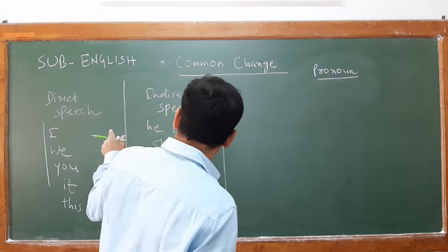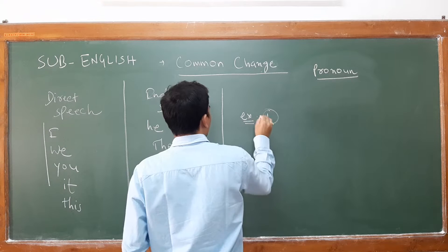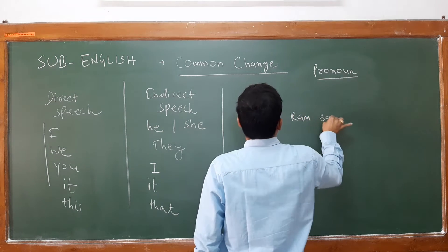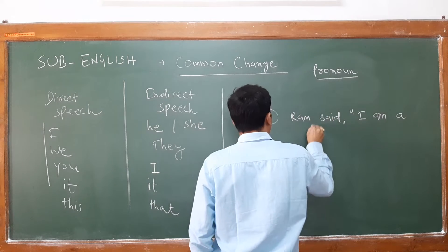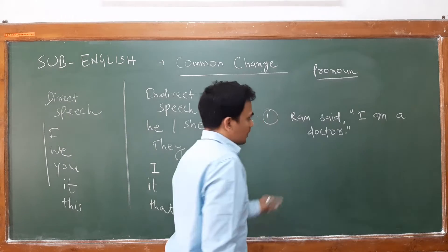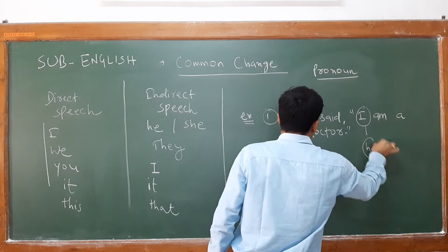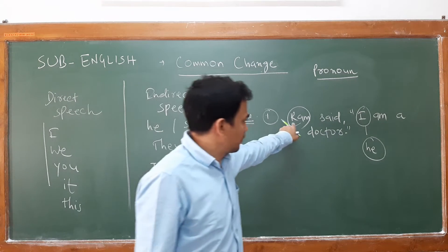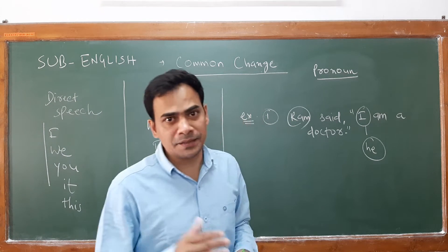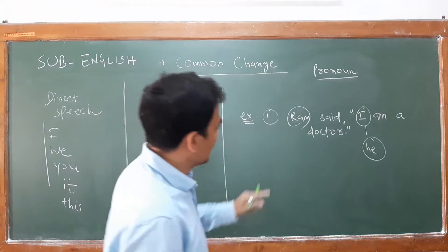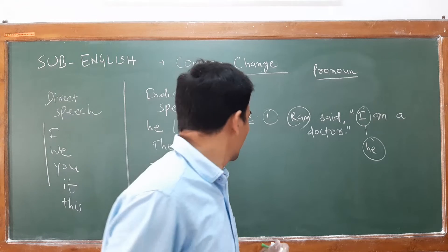Now I will cite an example of these pronouns — how they are changing. For example, Ram said, 'I am a doctor.' Now you see here, this pronoun will change into 'he' as per your subject. So 'I' basically changes into 'he'. If instead of Ram, I select a female gender like Sita or Radha, then this 'I' can change into 'she'. So 'I' can change into either 'he' or 'she'.